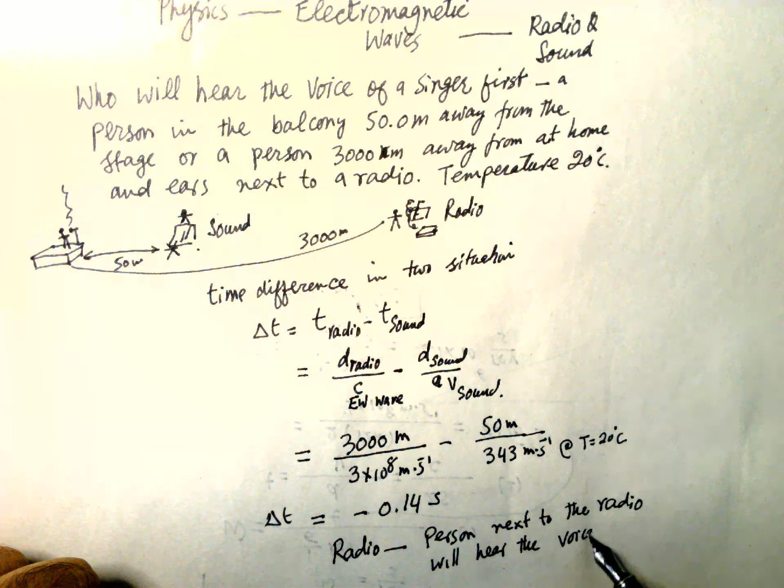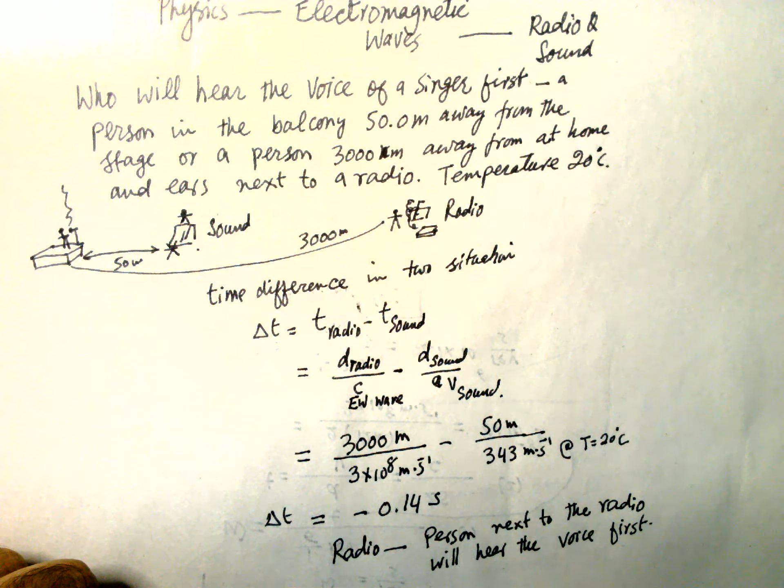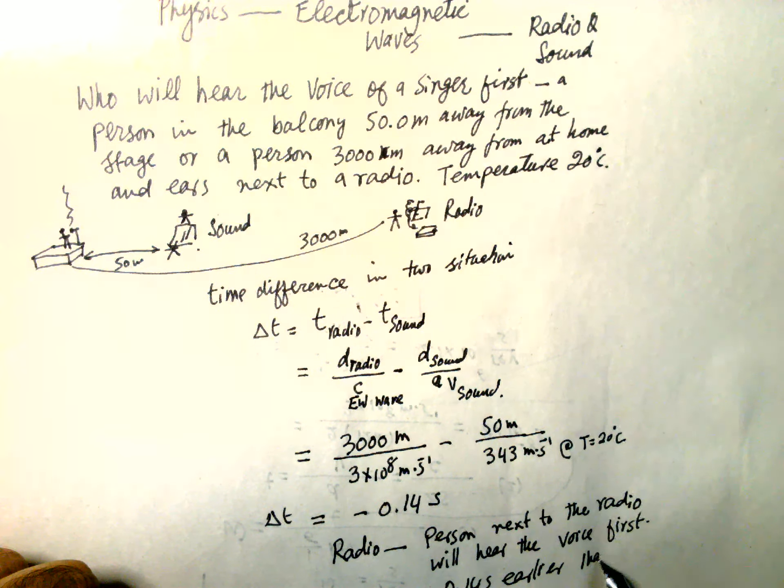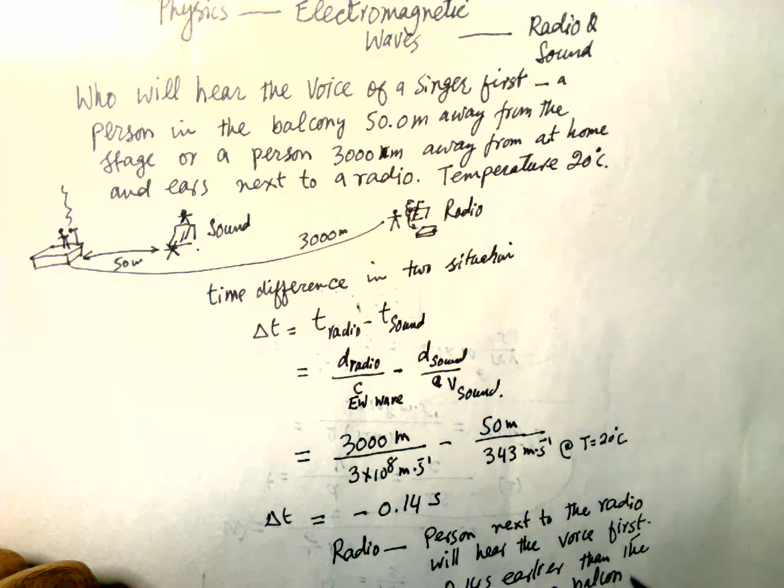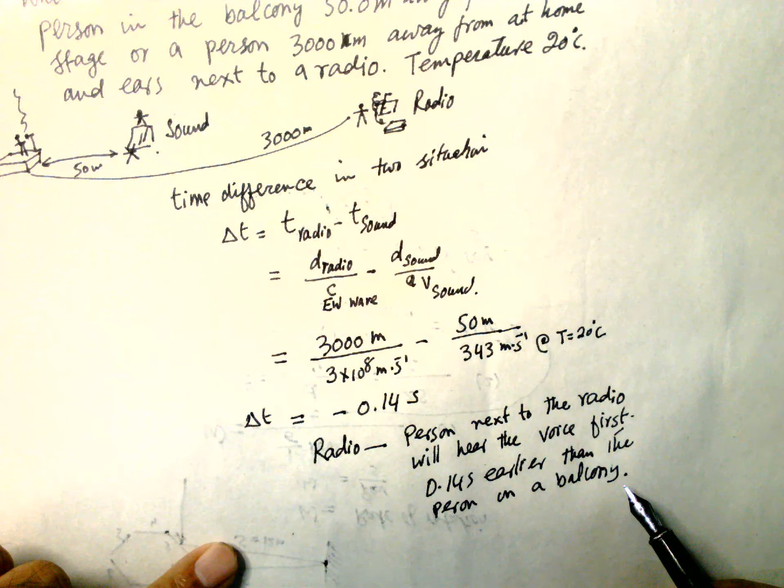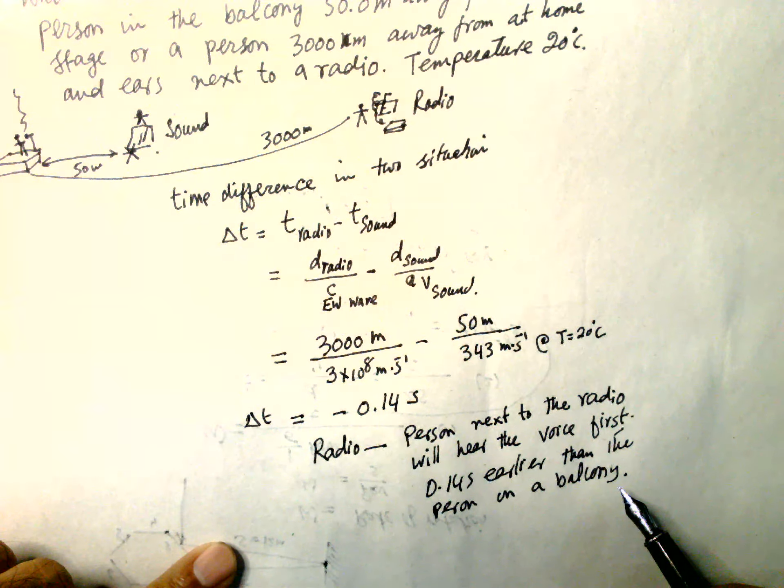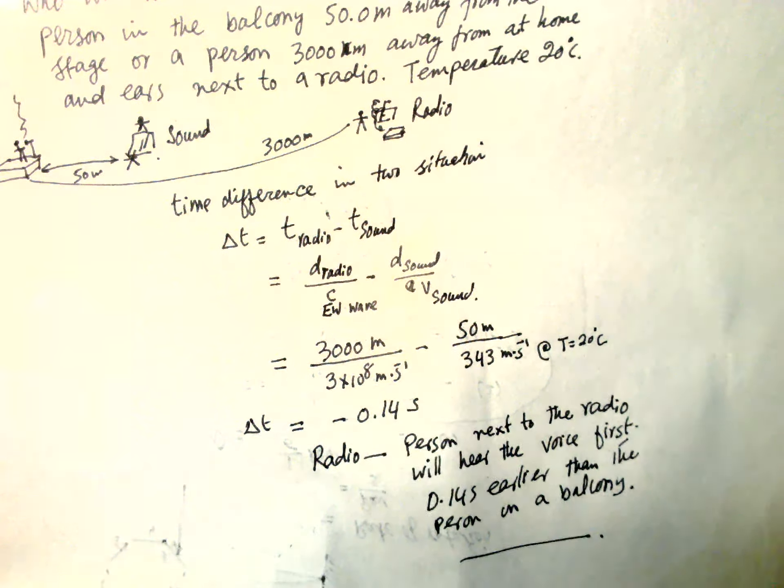The person with the radio will hear the voice first, and the difference is 0.14 seconds earlier. Then the person on the balcony will hear the voice later than the person on the radio. So this is the answer to this question.